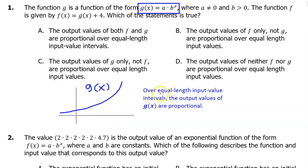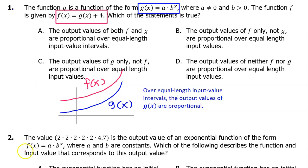By definition, we know that over equal length input value intervals, the output values of g(x) are proportional. This is the wording that the College Board likes to use, so be familiar with it. We are told that f(x) = g(x) + 4, which is a vertical translation of g(x) by 4. The question is: will the output values still be proportional after a vertical translation?